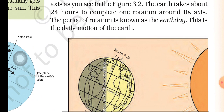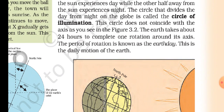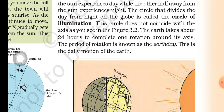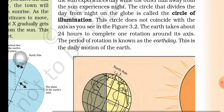So now, have you understood how day and night happen? The earth takes about 24 hours to complete one rotation around its axis. The period of rotation is known as the earth day. This is the daily motion of the earth.